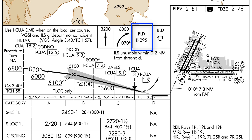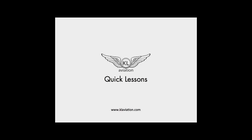You will intercept the Boulder 295 degree radial and proceed direct Boulder and hold. The holding pattern will be depicted on the plan view of the approach. That covers the main sections of the profile view of an instrument approach chart. We look forward to seeing you again in the next lesson.